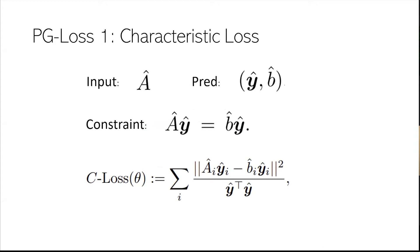The first physics guided loss is the characteristic loss. The input is Hamiltonian, predict the spectrum and eigenvalue which is the energy, the constraint of Schrodinger equations that we said before. We take the L2 norm of that residual. Noticeably there is a term in the denominator which is the normalized term to try to avoid trivial solution by predicting the spectrum to be all zero.